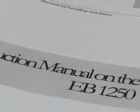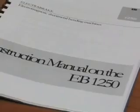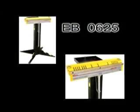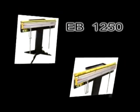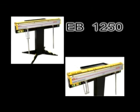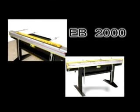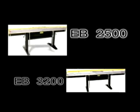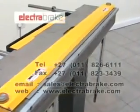A comprehensive manual is supplied which covers operation, maintenance, and how best to make various basic shapes. The Electrobrake EB0625 is the smallest in the range, followed by the EB1000 with a length capacity of 1 meter, the EB1250 with 1.25 meters, and the EB2000 with 2 meters. The EB2500 and EB3200 have bend capacities of 2.5 meters and 3.2 meters respectively. Electrobrake: taking sheet metal folding to the next level.